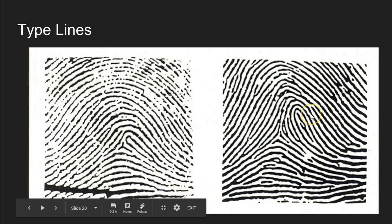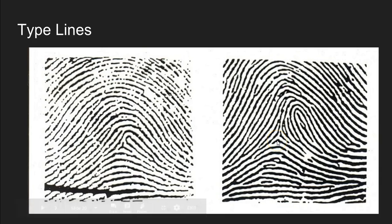Looking at the fingerprint on the right, we're again looking for two ridges that travel roughly parallel to each other and then diverge. Some ridges here travel parallel but never actually diverge. Down here though, one ridge branches off and travels left, and another branches off and travels down and to the right. These ridges traveling parallel that then diverge are our two type lines, and right here at the divergence is where we find our fingerprint's delta.